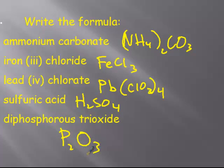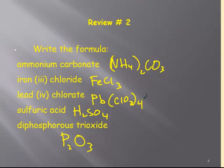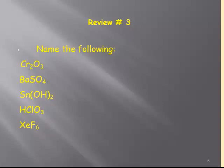Diphosphorus trioxide — the whole point is understanding where the subscripts come from. Where does the two come from? Where does the three come from? Because when we're balancing chemical reactions, we cannot simply start changing subscripts just to make our life easier. We have to follow the same rules we used to write the formulas. Chromium three oxide: that's a two because it's minus two and plus three. Barium sulfate is SO4, so that four belongs to the sulfate — plus two, minus two.